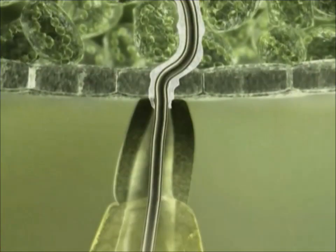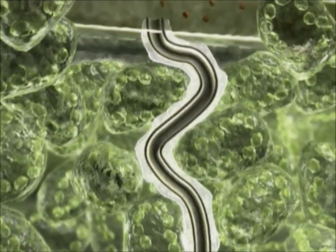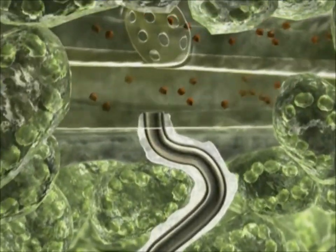During feeding, the aphid stylet bundle reaches the sieve tubes, in which the beet mild yellowing virus is transported in the infected plants.